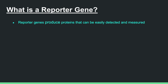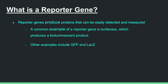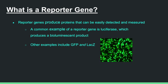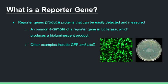A reporter gene produces a protein that is easily detectable. For example, a luciferase reporter protein will bioluminesce and that can be quantified with more ease than most other protein products. Other common examples include GFP, or green fluorescent protein, which is shown here, and LacZ, which is often used for blue-white screening.